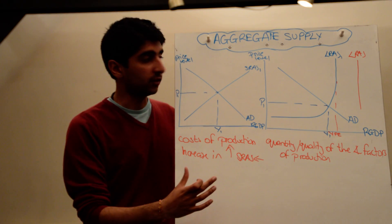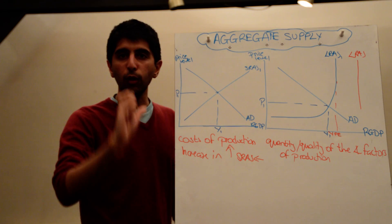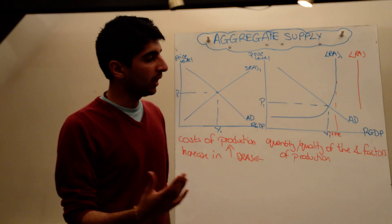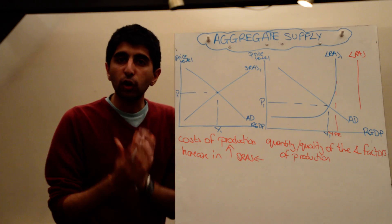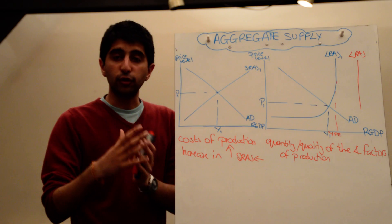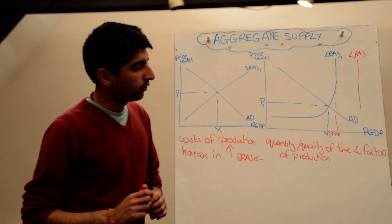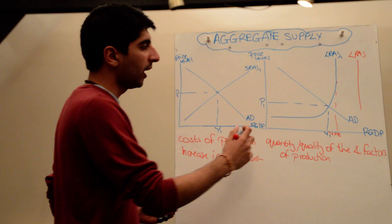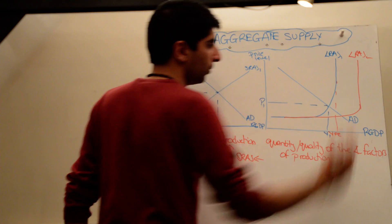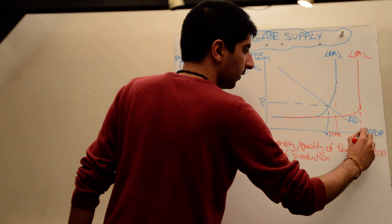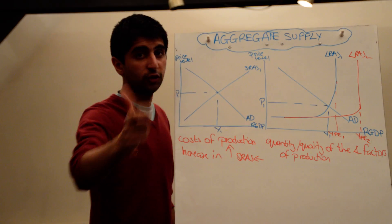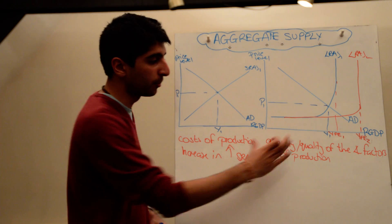So what can shift this curve — what can affect long-run aggregate supply — is an increase in the quantity and/or the quality of the factors of production. If these things increase, then the maximum the economy can produce will increase. If any of these decrease, then the amount the economy can produce actually falls. An increase in the quantity and quality of the factors of production would take you to LRAS 2, and the full employment level of output — the maximum potential of the economy — increases to YFE 2.